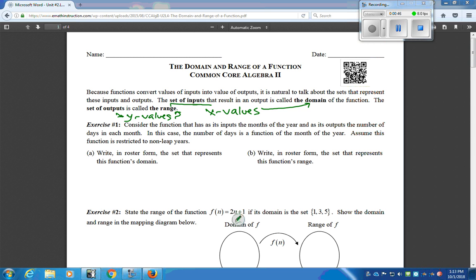So, they have exercise 1, it's considered the function. It has inputs as the months of the year, and outputs as the number of days in each month. And it said, use a non-leap year for the function. So, each month, the domain would be the listing of those months. So, January, February, March, and I'm just going to abbreviate this list all the way up to December.